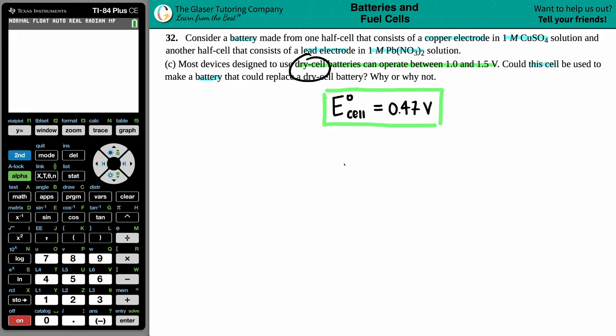Now, dry cell batteries, which are your AA batteries, your AAA batteries that you use in your television remote controls, they can operate only between 1.0 and 1.5 volts. If we just draw out our 1.0 volts all the way to 1.5 volts, basically, if we wanted our battery to run like a dry cell battery, I need to have my voltage in between 1 and 1.5.